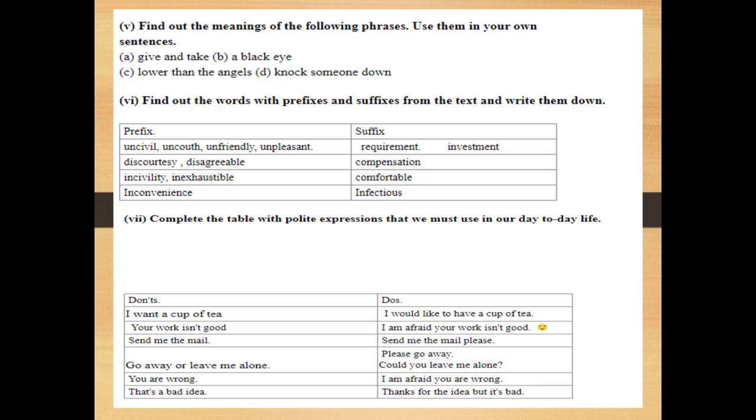What are the do's and don'ts? In this table it is given: for example, if you want a cup of tea, you can say in a polite way, I would like to have a cup of tea. Your work isn't good—don't hurt anybody, just say I'm afraid your work isn't good. Send me the mail—don't order anyone, just say send me the mail please. Use the word please. Go away or leave me alone—you can say please go away or could you leave me alone? You can ask in a question form. You are wrong—instead of saying that, say I'm afraid you are wrong. That's a bad idea—thanks for the idea, but it's bad in a gentle way. The author tries to say that though you want to give a negative reply, you have to be polite and humble without hurting the feelings of the person in front of you.